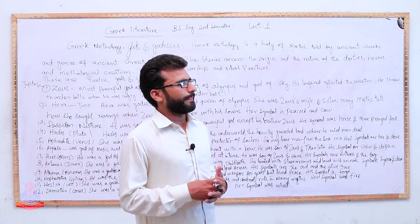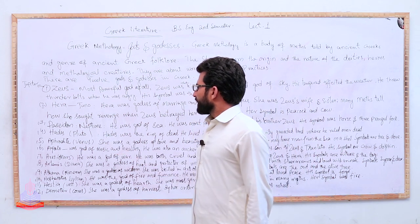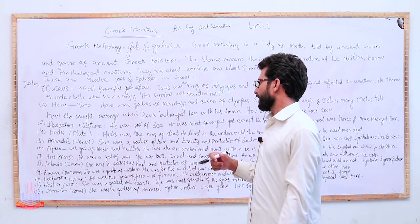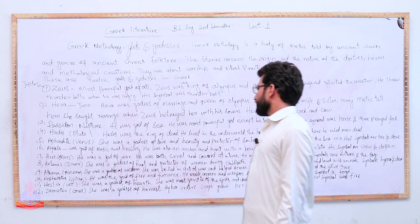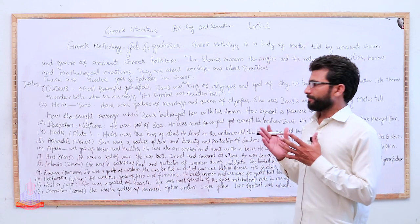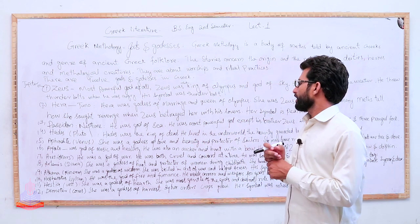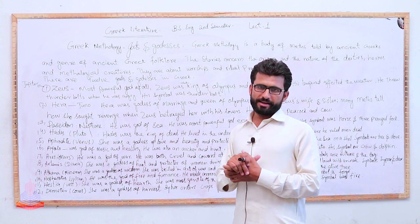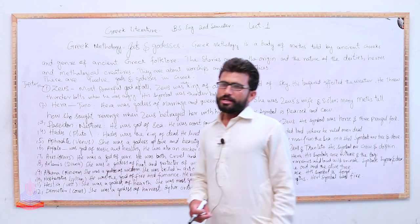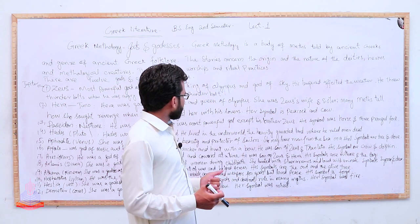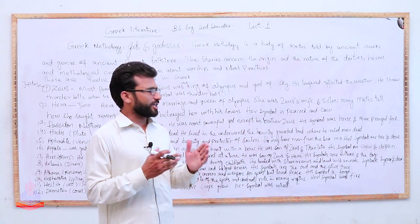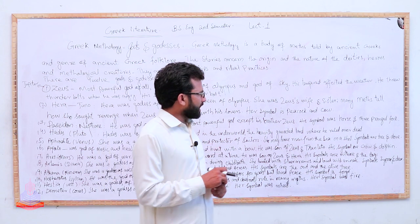Next Artemis. Artemis in Roman they called it Diana. She was goddess of hunt and protector of women during childbirth. During childbirth she is the protector of women and she is goddess of hunt. She hunted with silver arrows and loved wild animals. Symbols are cypress and deer - cypress tree and deer.